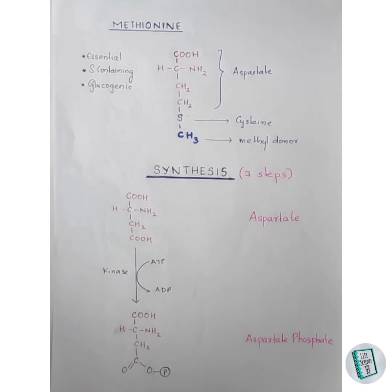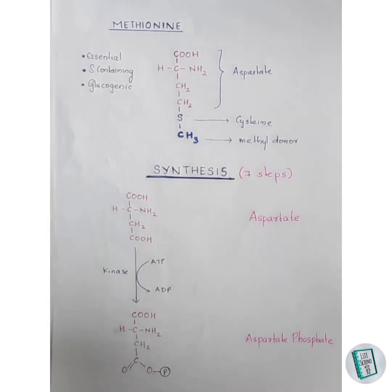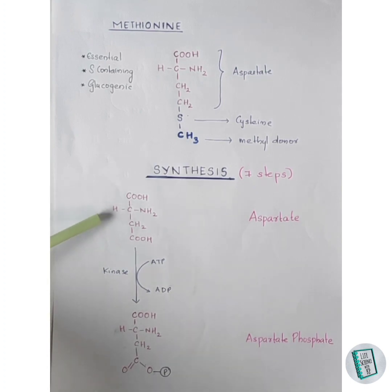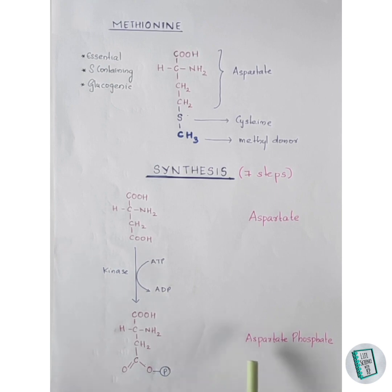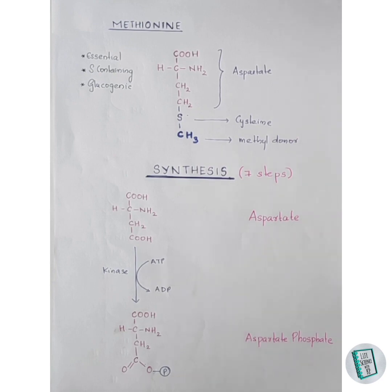The synthesis of methionine starts from aspartate and proceeds through a series of seven reactions. Aspartate undergoes phosphorylation by a kinase enzyme with the help of ATP. The phosphate group donated by ATP is added to the oxygen of the carboxyl group, forming aspartyl phosphate. This is the first reaction.